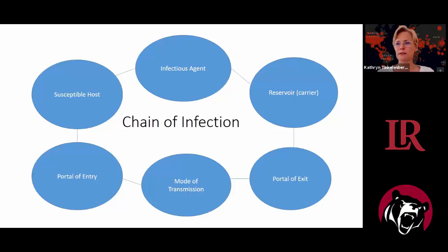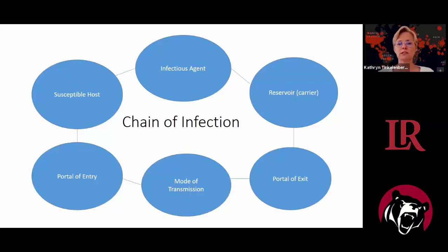The portal of exit is how the microbe gets out of the reservoir. The mode of transmission is how it gets from the reservoir to a portal of entry on a susceptible host — for mosquito-borne diseases, for instance, the mode of transmission is a mosquito biting a person. The portal of entry for respiratory diseases is usually the nose or mouth. The susceptible host is the person who's going to get sick from the infectious agent.